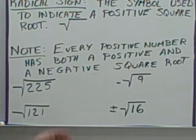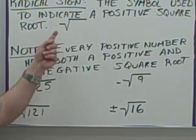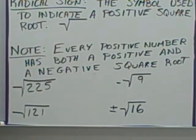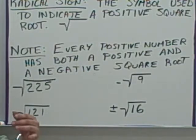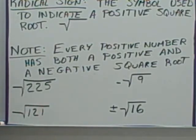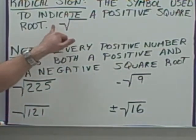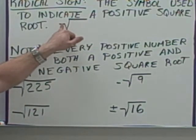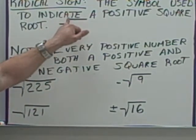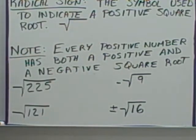Radical sign. A radical sign is a symbol used to indicate a positive square root. It should look like a line first and then angled down. That's what a radical sign looks like.